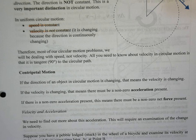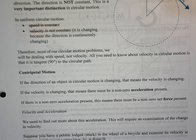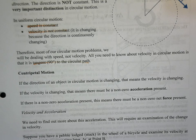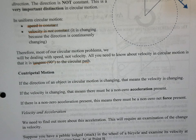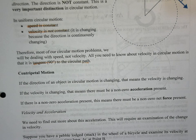All you really need to know about velocity in circular motion, besides how to calculate it, is that the velocity vector is always tangent to the circular path. When we deal with circular motion, we're going to be working with speed pretty much exclusively, because it's a lot easier and speed is really all we need.